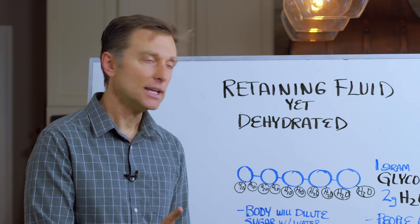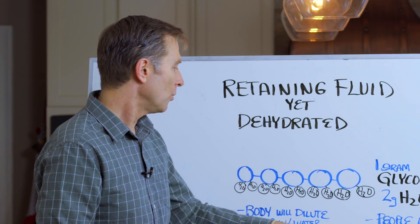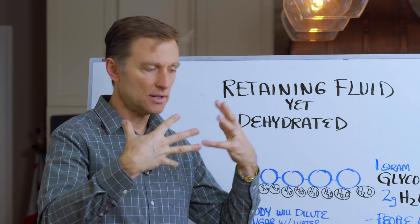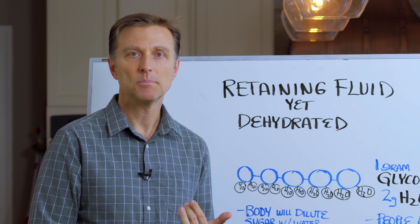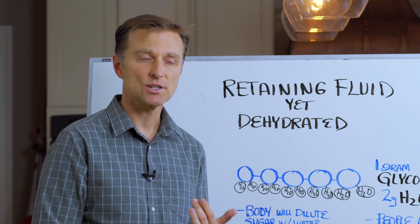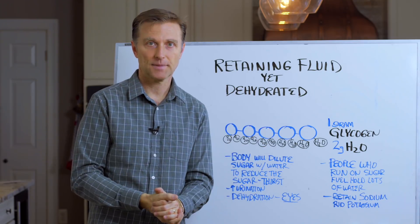Now, the body will start diluting this toxic sugar. This is a defense mechanism against sugar with water. It'll take water and it flushes it out through the urine. This is why diabetics pee so often. This is why diabetics are so thirsty because the body's trying to take this water and flush out the sugar.